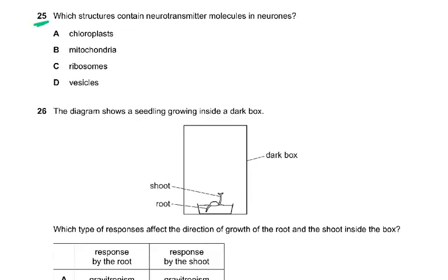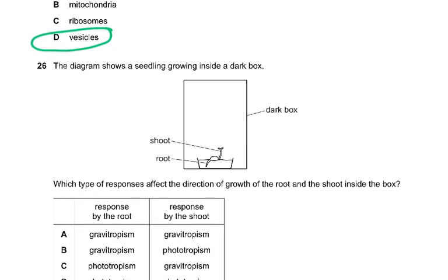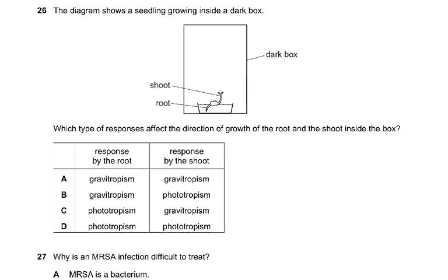Question 25: Which structures contain neurotransmitter molecules in neurons? The options include chloroplasts, mitochondria, ribosomes, and vesicles. Chloroplasts — never, because those are in plants. The answer is vesicles. Neurotransmitters are present in vesicles which fuse with the presynaptic membrane and release the neurotransmitter into the synaptic cleft.